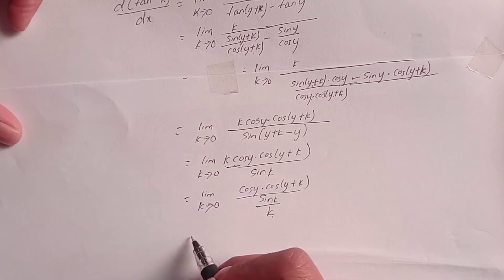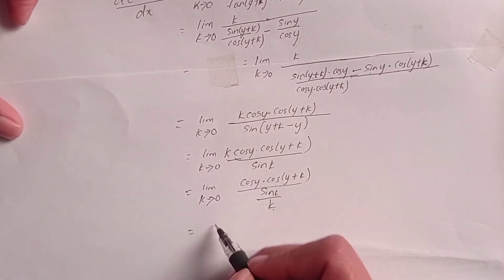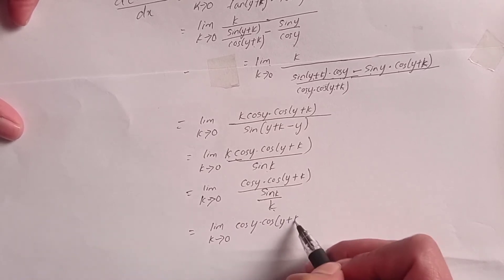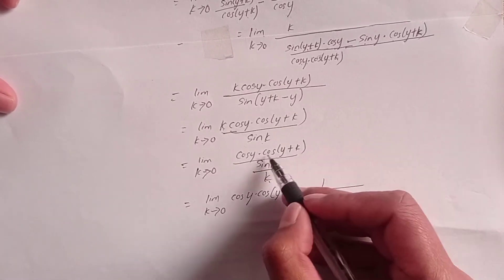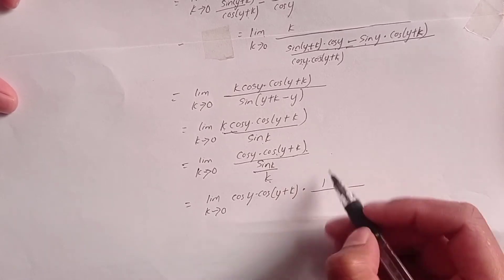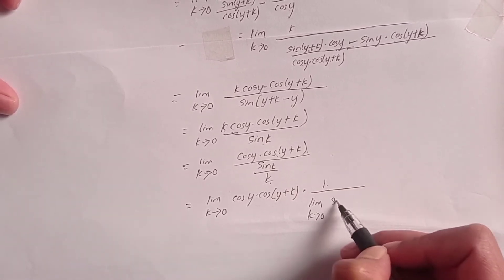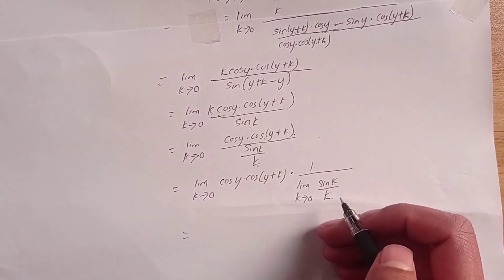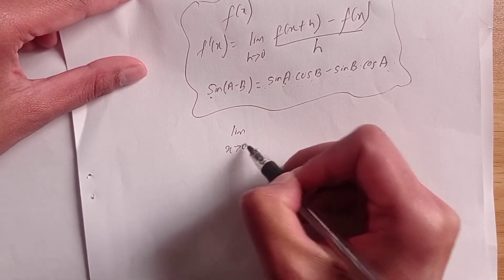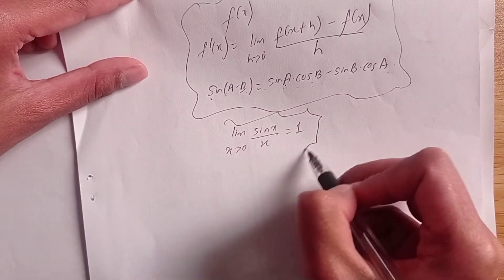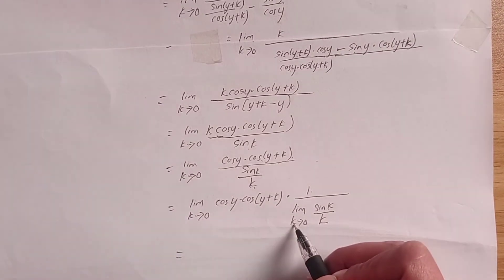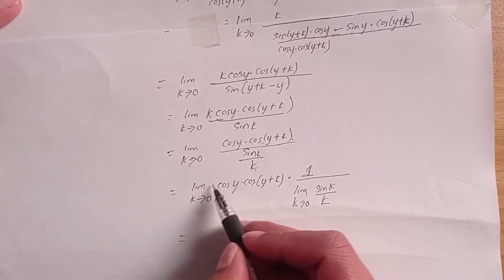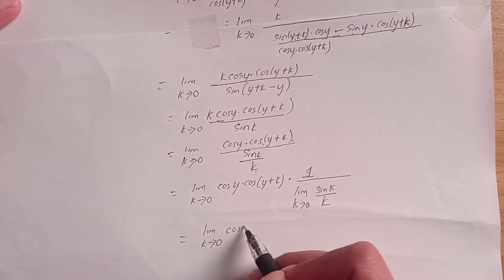So it is equal to limit k tends to 0 of cos y dot cos(y+k), multiplied by limit k tends to 0 of sin k divided by k. Since the standard limit of sin k divided by k equals 1, this factor equals 1.